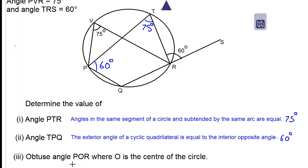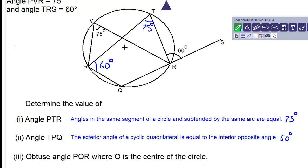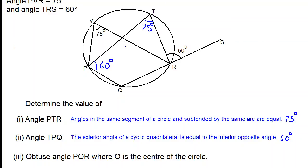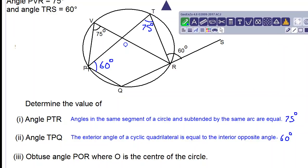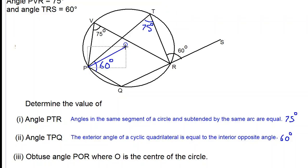So called part 3, obtuse angle POR where O is the center of the circle. So let's choose a center of the circle and label it O. And now let's draw lines to connect P to O and to R.